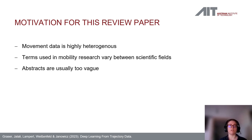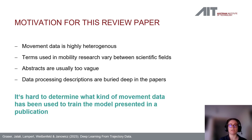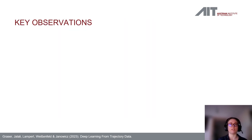Additionally, abstracts are usually very vague. They might describe the problem being addressed but rarely describe in enough detail how the solution looks. The data processing steps themselves are usually buried deep in the papers, making it really hard to determine what kind of movement data is being used to train the model presented in a publication.